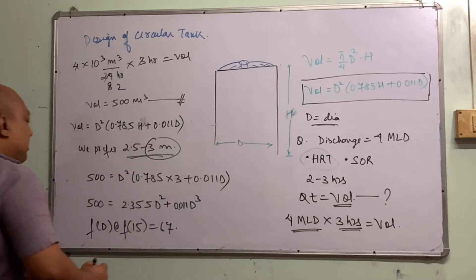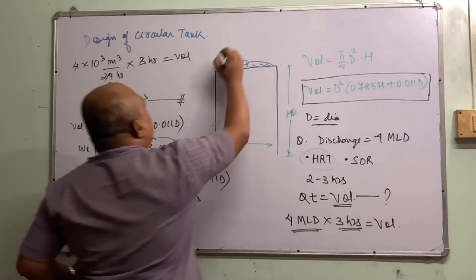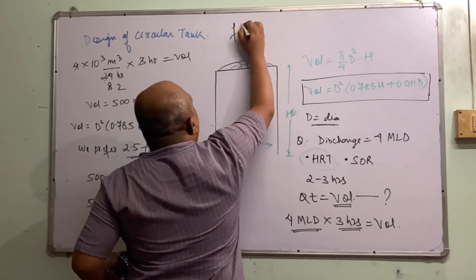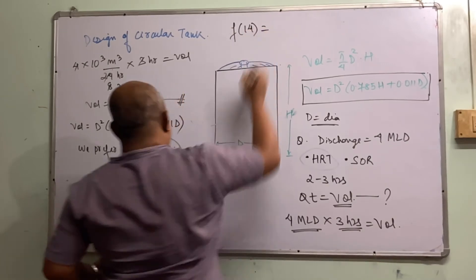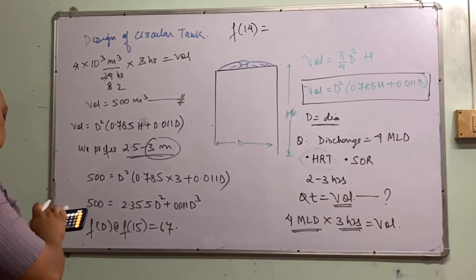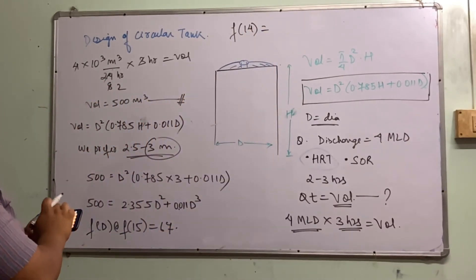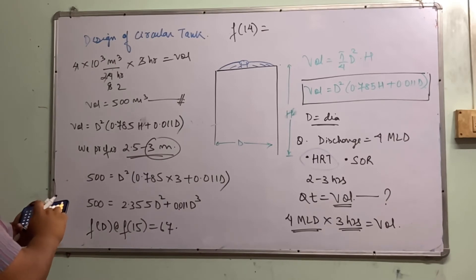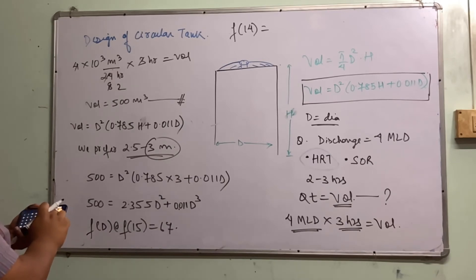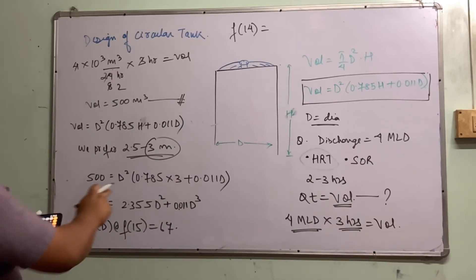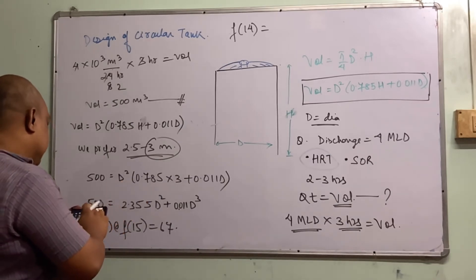Now let's find F(14): F(14) = 0.011 × 14³ + 2.355 × 14².